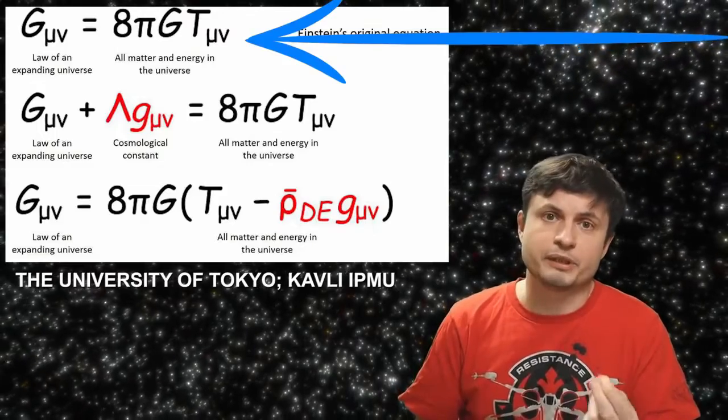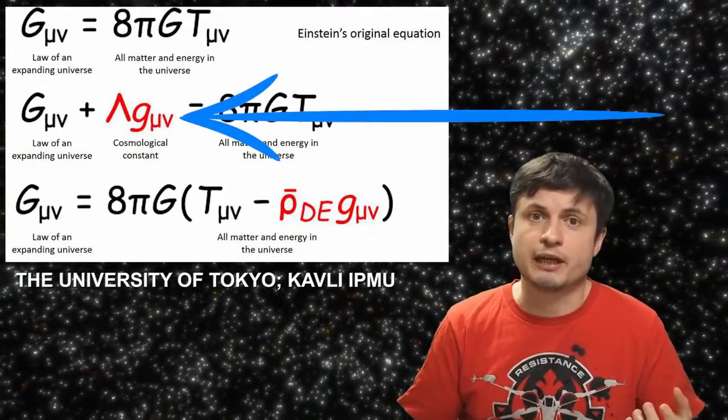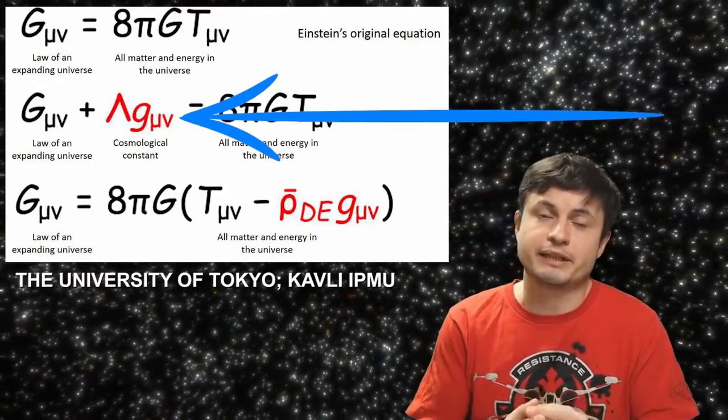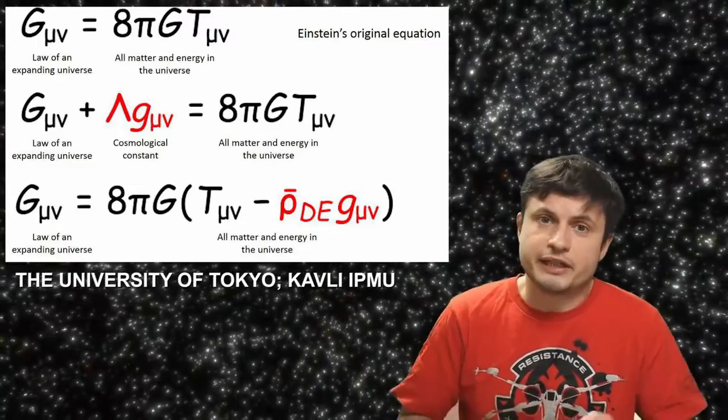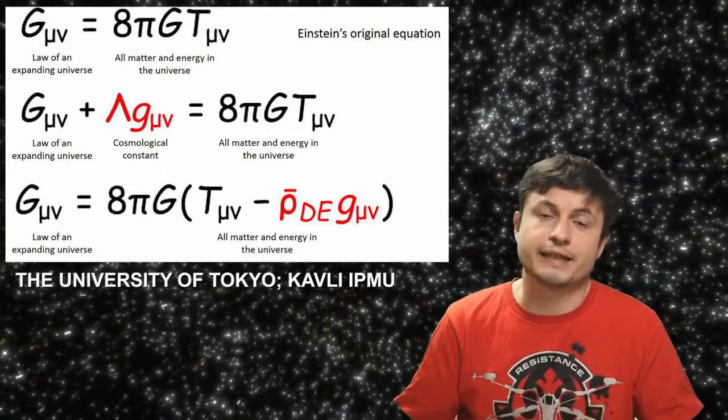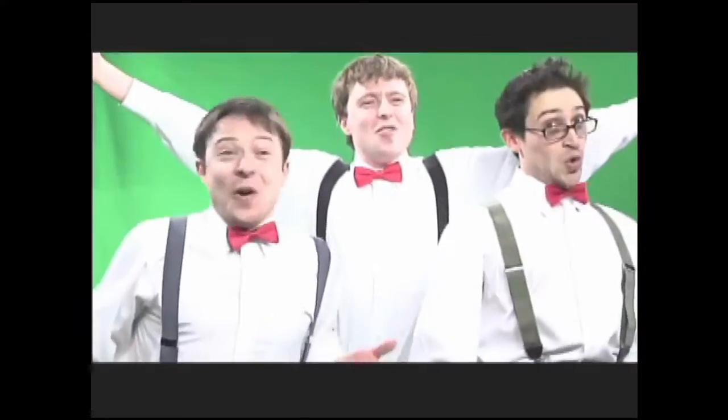At the same time, the discovery of dark energy also allowed the scientists to finally reconcile the problem with the early Einstein formula, which essentially had this term in it that Einstein threw away initially, but that actually explained the acceleration of the universe, and essentially represented a kind of constant in the universe.